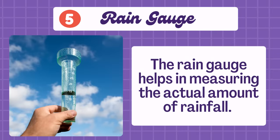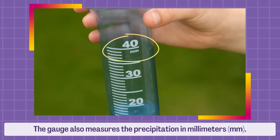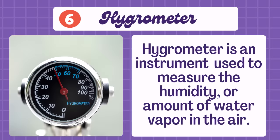Number five: rain gauge. The rain gauge helps in measuring the actual amount of rainfall. It is a long and narrow cylinder which can measure rainfall up to almost 8 inches. The gauge also measures the precipitation in millimeters. Number six: hygrometer. A hygrometer is an instrument used to measure the humidity or amount of water vapor in the air.